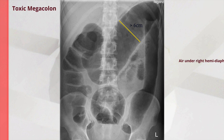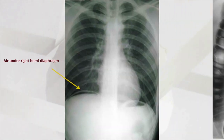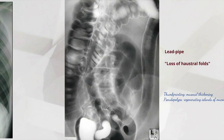On the abdominal film, what you're really looking for is toxic megacolon — the key figure to remember is greater than 6cm diameter. If you saw this, refer to the surgeons quickly. A chest X-ray is important as these patients are at increased risk of perforation; air under the right hemidiaphragm indicates a perforated intra-abdominal viscus. On a barium enema, the classical feature is loss of the haustral folds in the descending colon, often referred to as 'lead pipe.' Other findings include thumb printing representing mucosal thickening, and pseudopolyps representing regenerating islands of mucosa.